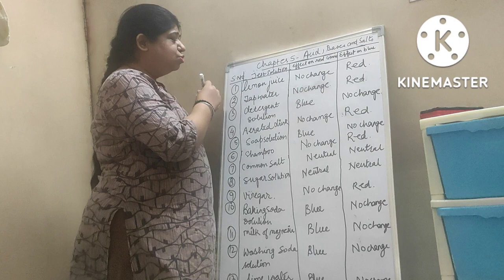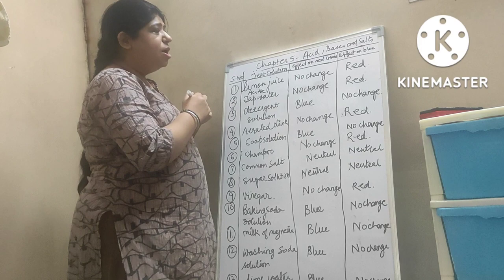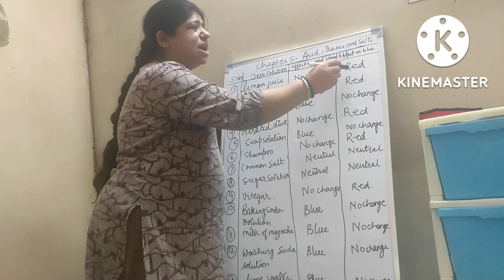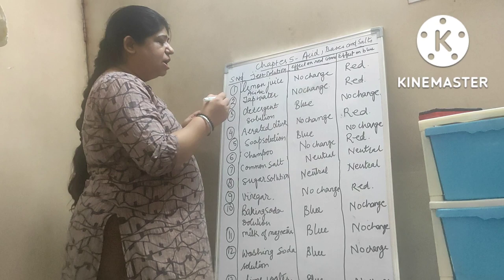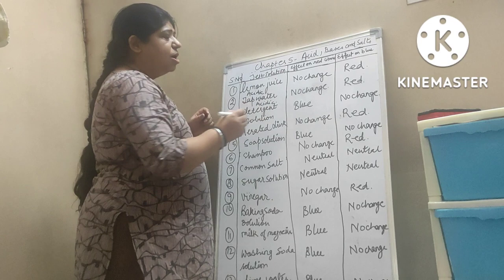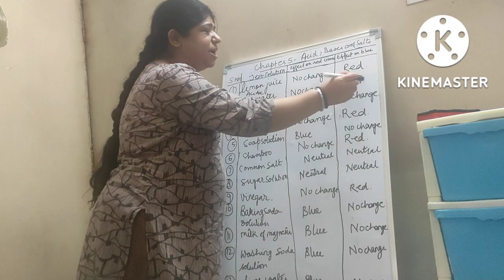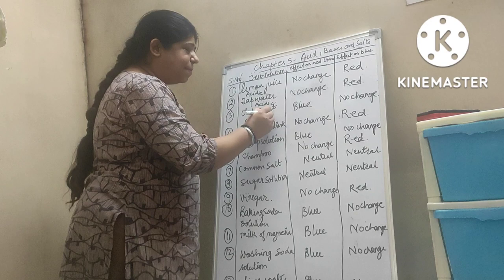Lemon juice is there. You all know lemon juice is acidic in nature. So in red litmus paper it will not give any change, and in blue litmus paper it will turn into red. Tap water — you know tap water is acidic in nature. So red litmus paper will not give any change and blue litmus paper will change into red.